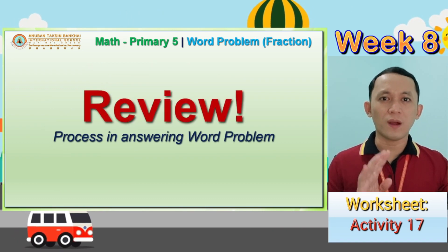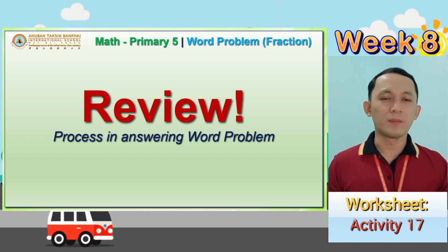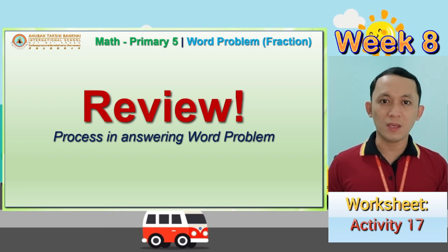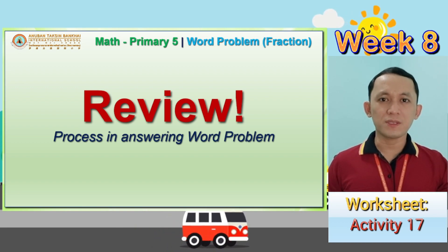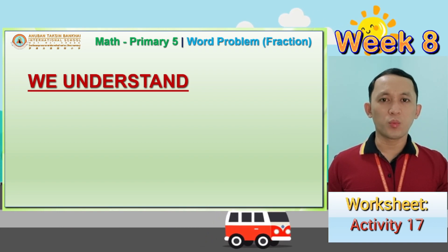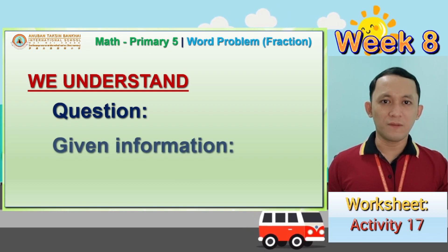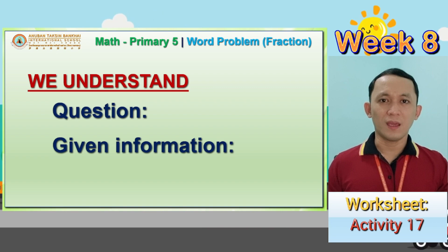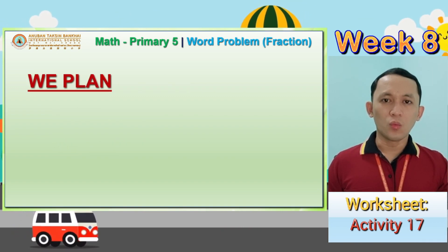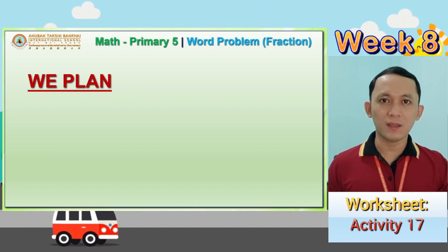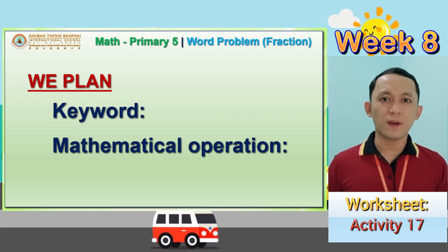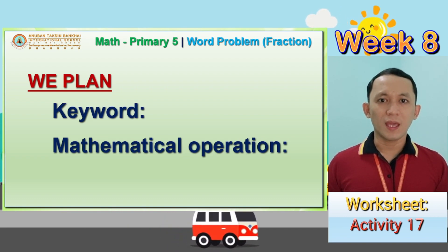Let's have a quick review of our four stages on how to solve a word problem. There are many ways to answer a word problem, but let's follow the four stages used in your book. The first stage is 'We Understand' — under this, we write the question and the given information that could help us answer the word problem. Next, we have 'We Plan,' where we write the keyword and the mathematical operation.